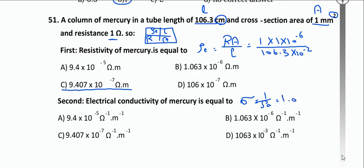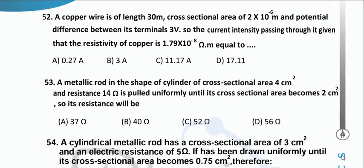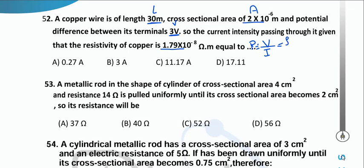The conductivity = 1.063×10⁶ Ω⁻¹·m⁻¹. Given potential difference = 3 V and resistivity ρ = 1.79×10⁻⁸ Ω·m, length = 30 m, area = 2×10⁻⁶ m². The current intensity passing through it equals 11.17 A.